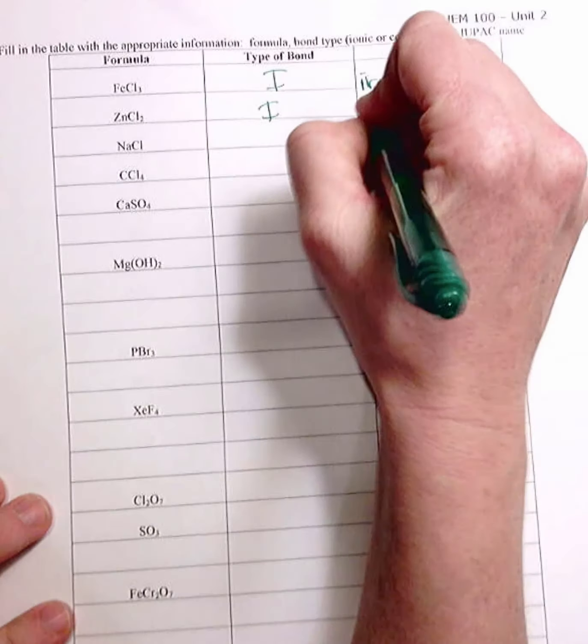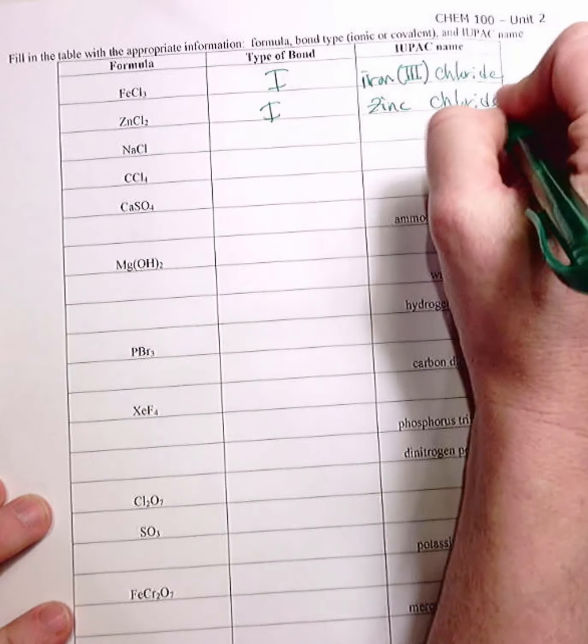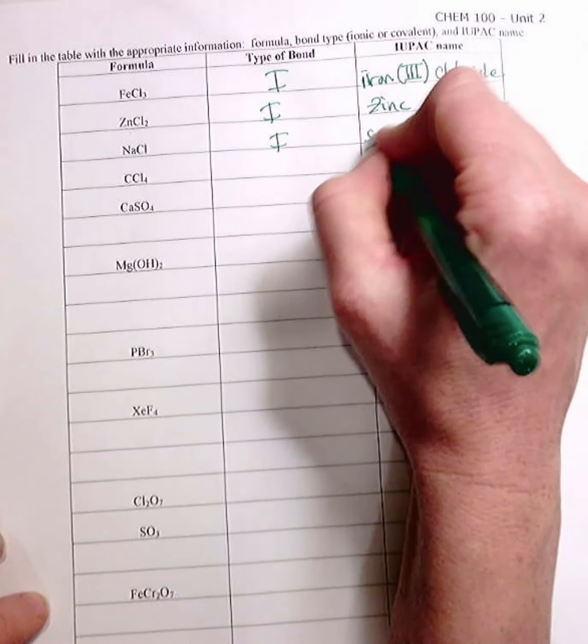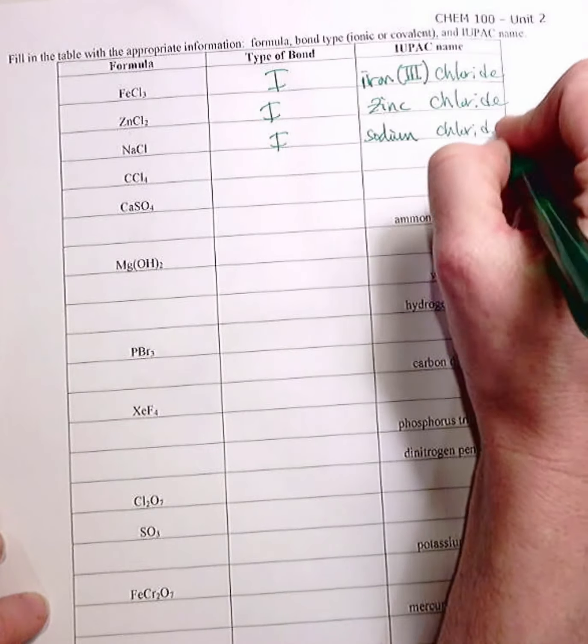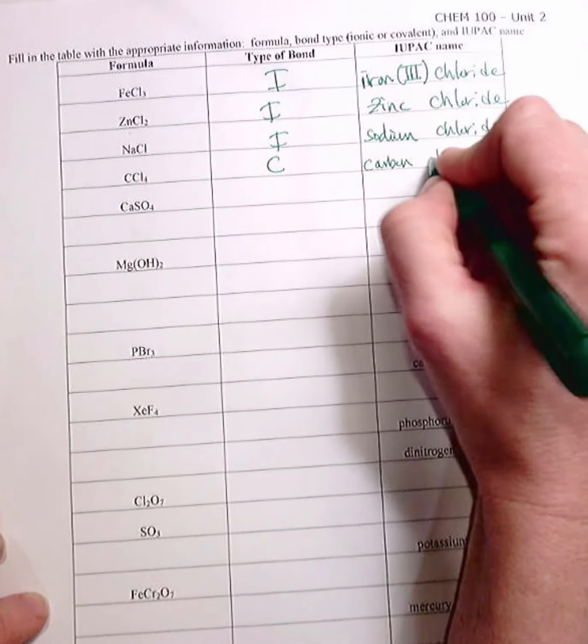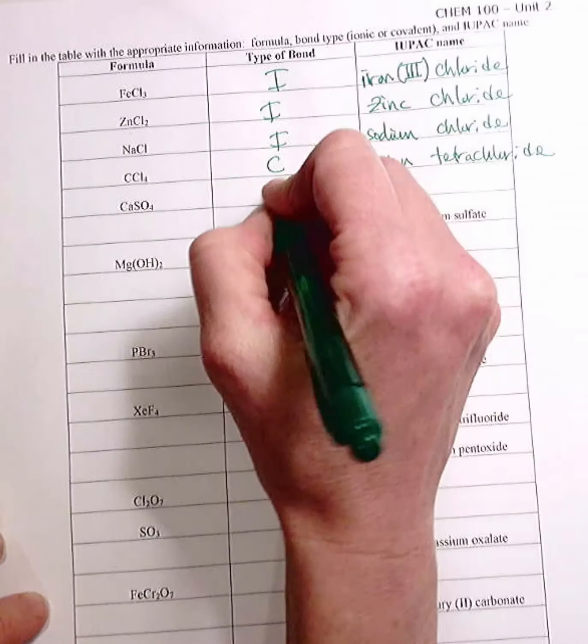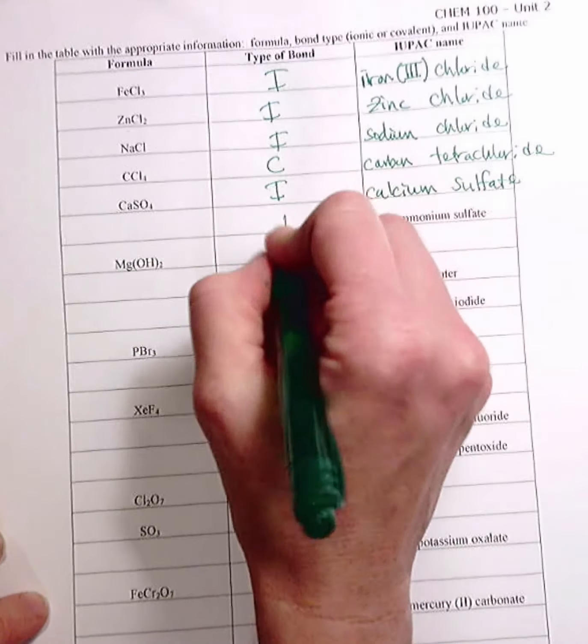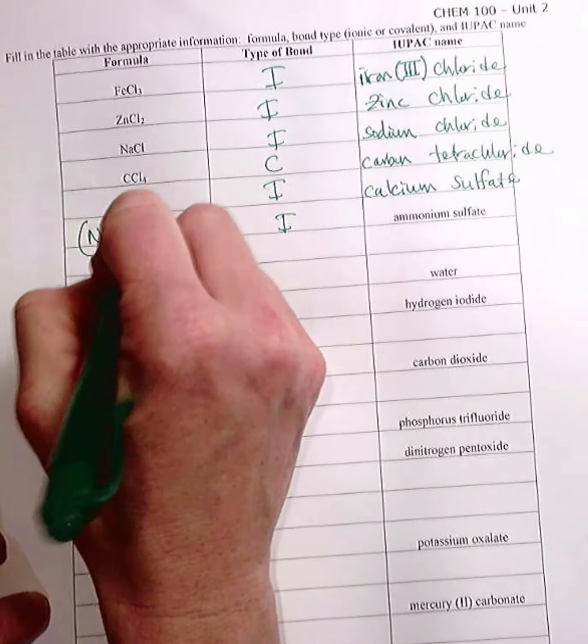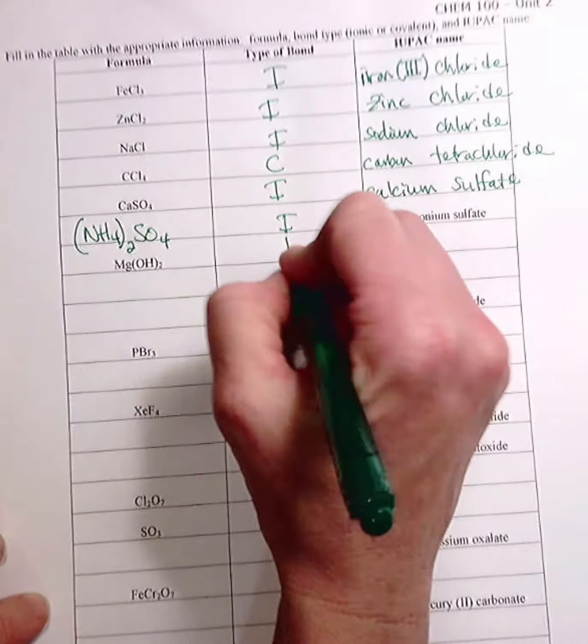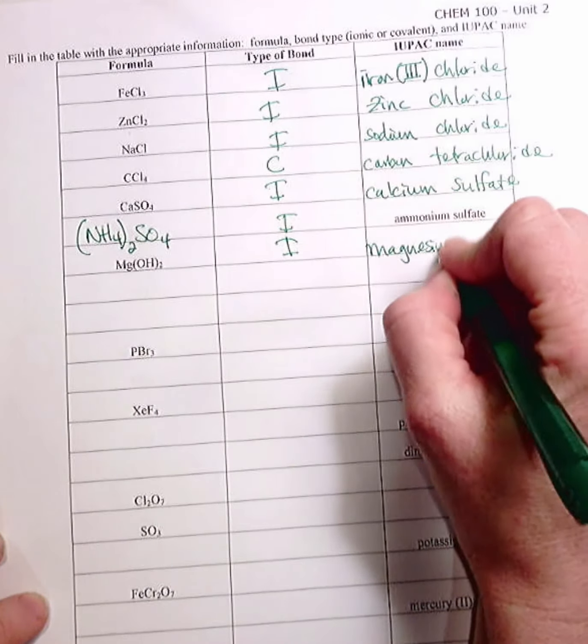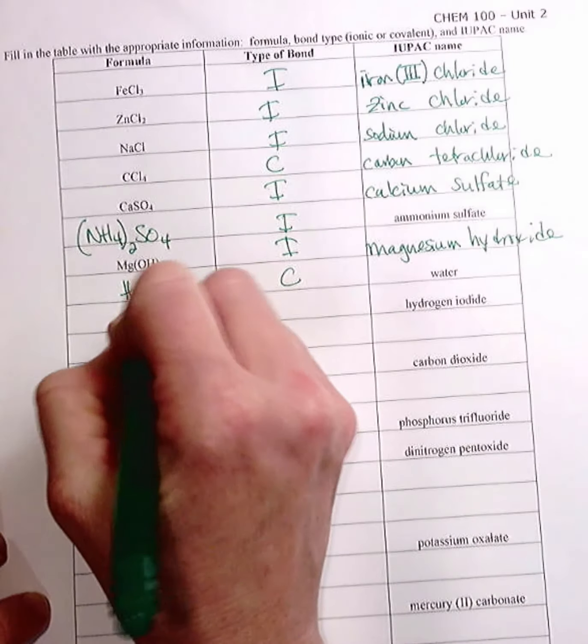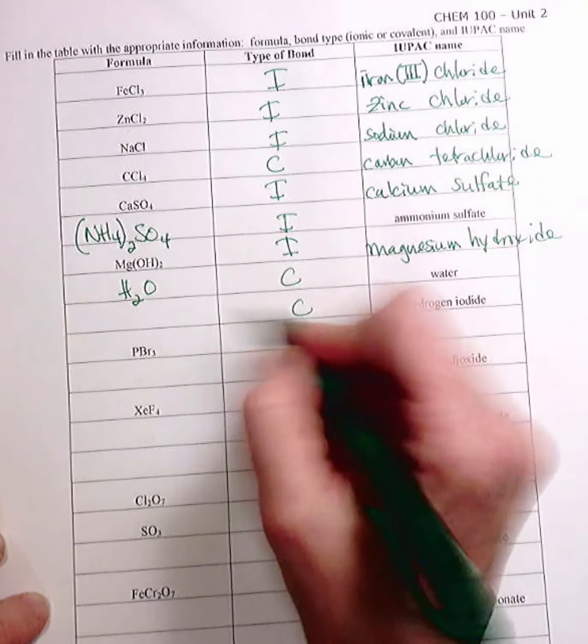Okay. This is ionic zinc chloride. Why don't I use a Roman numeral? Because zinc is a transition metal with only one charge. So you don't say zinc 2 chloride. The next one is ionic too. Sodium chloride. The next one is covalent. Carbon tetrachloride. Ionic calcium sulfate. Ammonium sulfate is ionic. It's (NH4)2SO4. Okay. Ionic. Magnesium hydroxide. Next one is covalent. And that's H2O. Hydrogen iodide is covalent. And that's just HI.